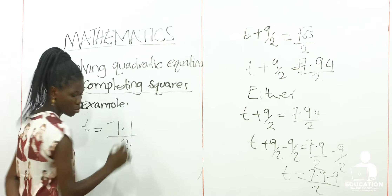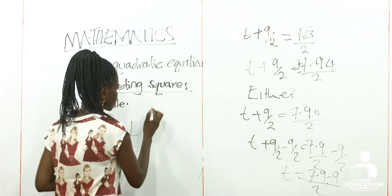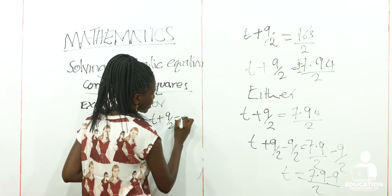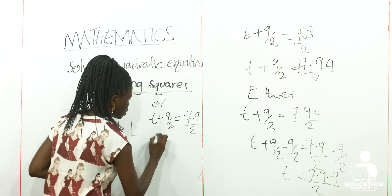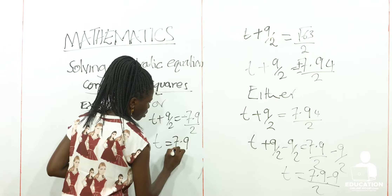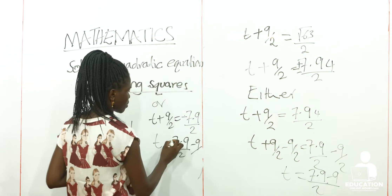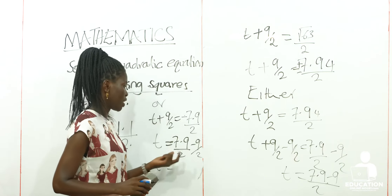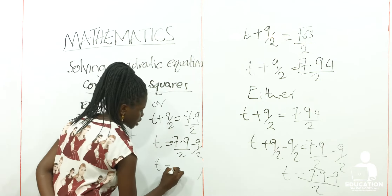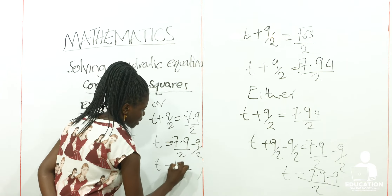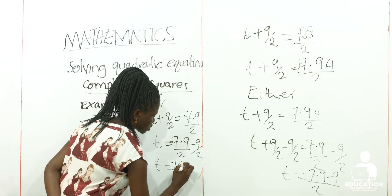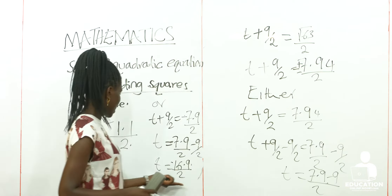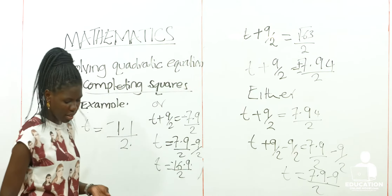All this out of 2. Then let's find the second part of T, which is: T + 9/2 is equal to negative 7.9 out of 2. So we shall have T equal to negative 7.9 over 2 minus 9 over 2. Adding negative and negative means putting together, so it's 9 plus 7 to make 16.9. Our LCM is 2. So we are going to have negative 16.9 as our second value of T. The first value is negative 1.1 over 2, and the second one is negative 16.9 over 2.